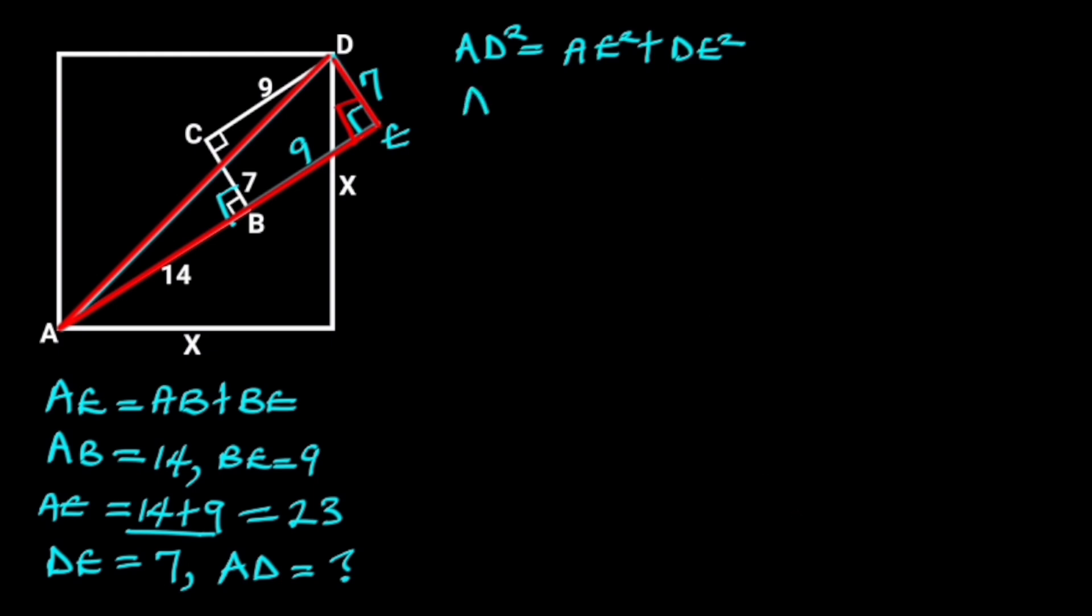we will have AD squared is equal to 23 squared plus 7 squared. 23 squared is 529, and 7 squared is 49. So, AD squared is equal to 529 plus 49. 529 plus 49 is 578.